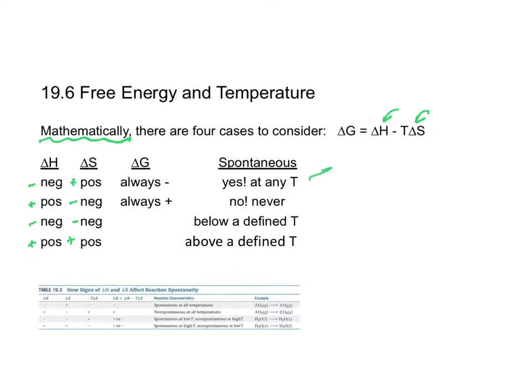We'll take a look at the first one which has a negative delta H and a positive delta S. If I put those two into the delta G equation we will get a negative delta G and that is why we say this will be spontaneous at any temperature.